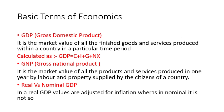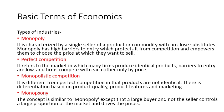Then we have GNP, or Gross National Product. It is the market value of all the products and services produced in one year by labor and property supplied by the citizens of a country. Then we have real versus nominal GDP — in real GDP, values are adjusted for inflation, whereas in nominal GDP they are not.